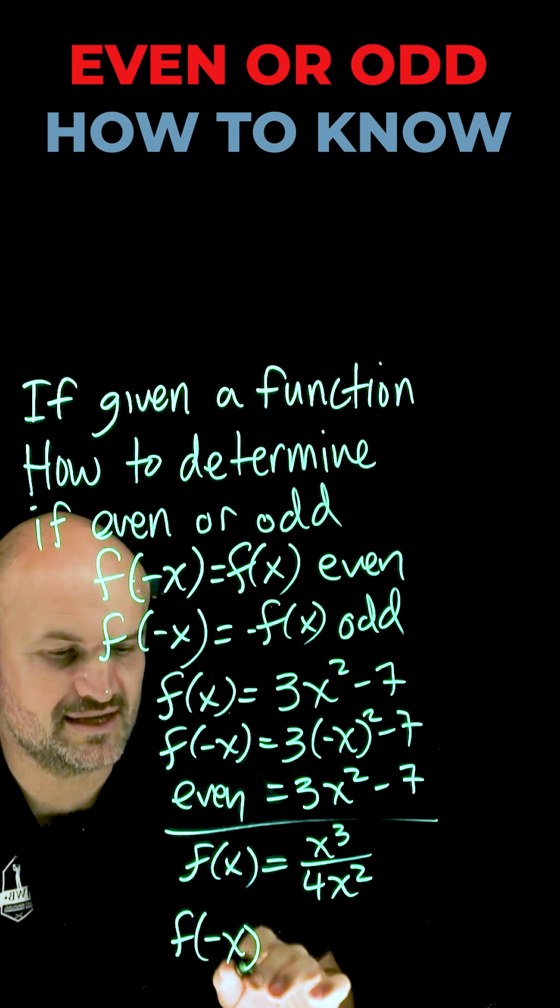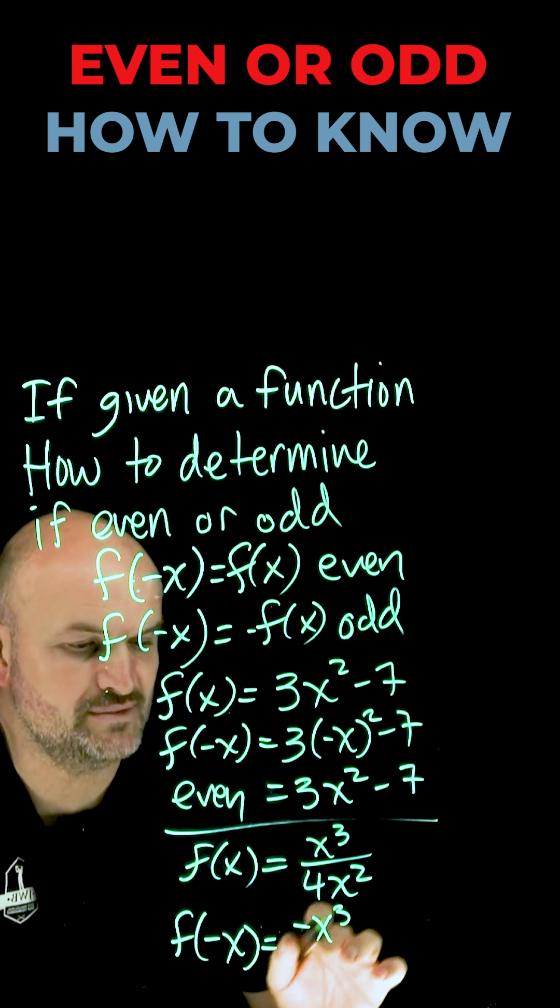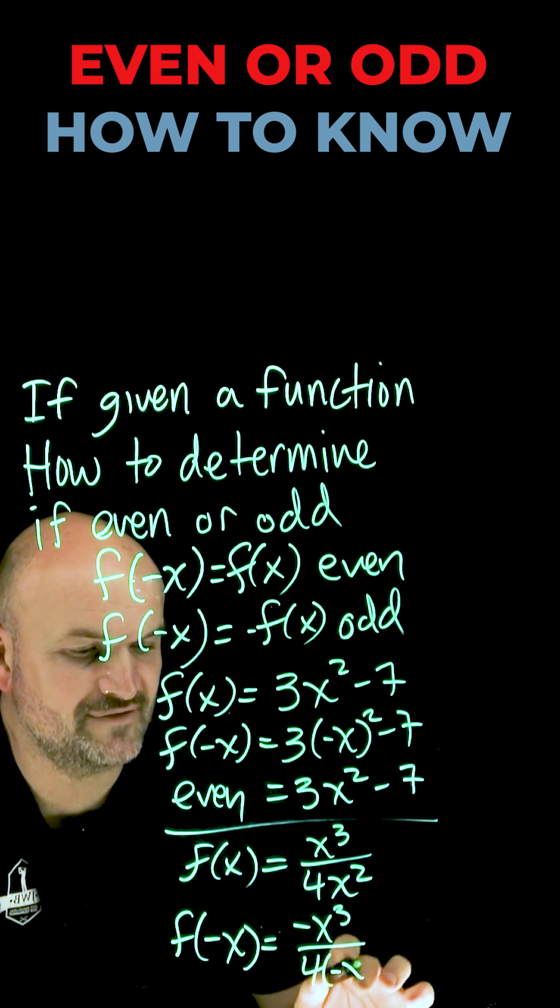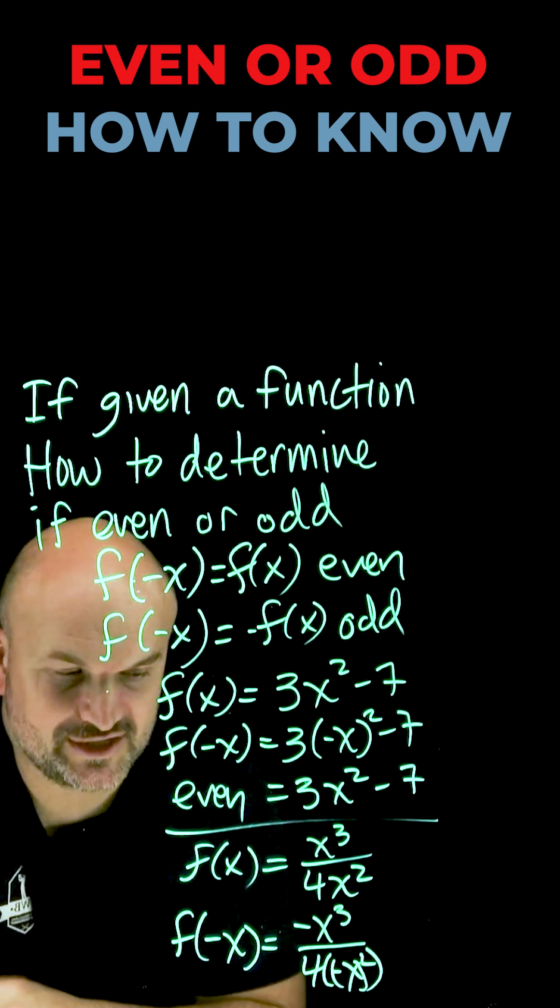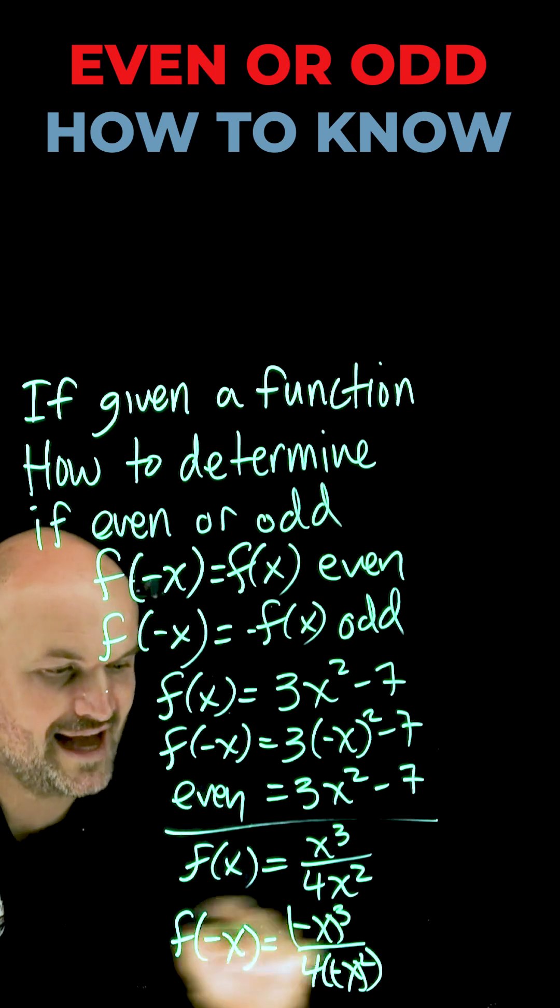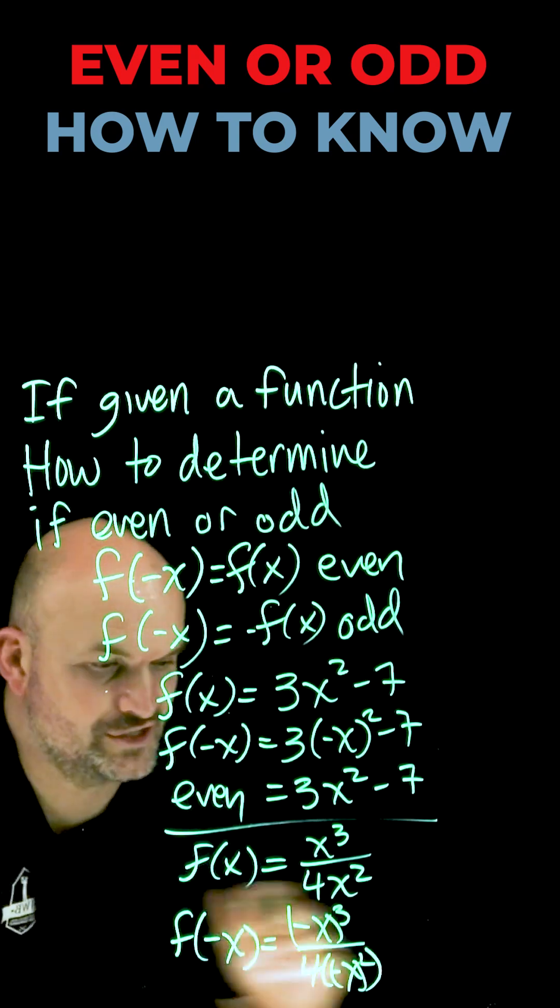So when I plug in f of negative x, I'm now going to get negative x³ divided by 4 negative x². So negative x squared is just going to give me x².